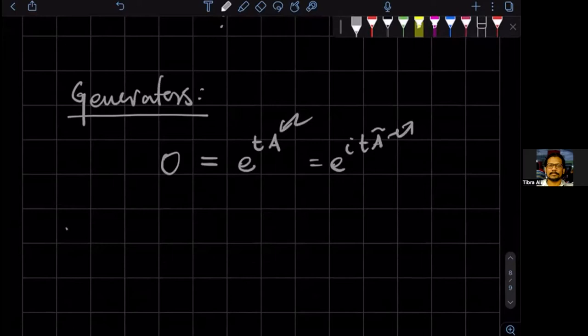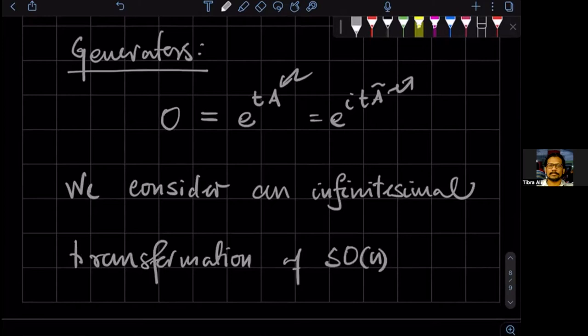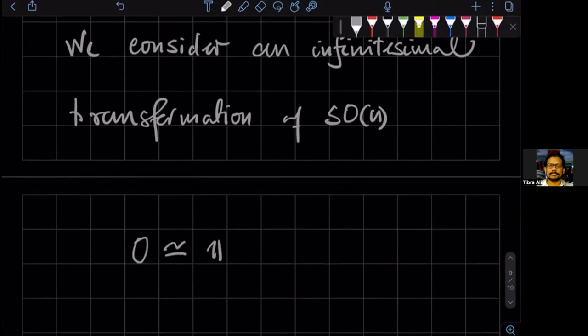To find the generators, we consider an infinitesimal transformation of O-N. It's actually SO(N) because it's only the SO part which can have infinitesimal transformation. So we write O as the identity operator matrix plus I conventionally times theta A, these are the parameters, the real parameters, times T A, these are the generators.